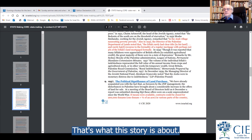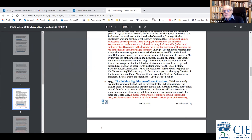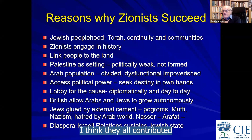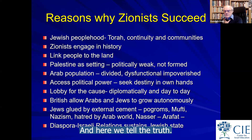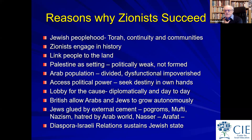This story is about how they did it. The conclusion I hope you reach is: why did the Zionists succeed? I've laid out all the factors I see — and I think they all contributed to the state's existence. I don't think you can exclude any of them. I know it's complex, but that's what history is. History is complex. And here we tell the truth — what we know from archives, not from a political viewpoint, but from what the sources reveal to us.